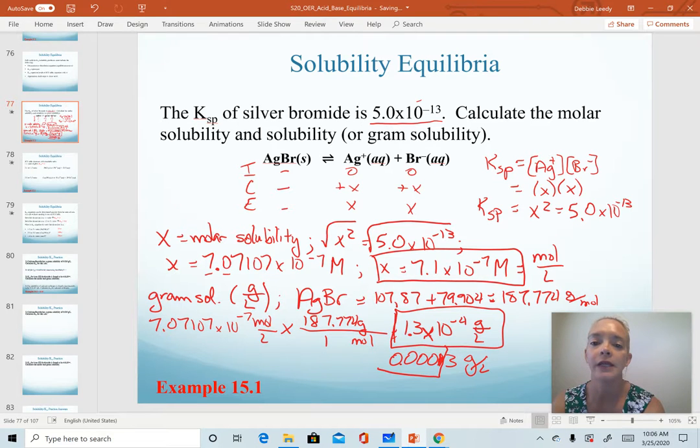Noticing our Ksp value, 10 to the minus 13, that tells us this is not a soluble salt. And that gram solubility helps to verify that. So the smaller your Ksp, the smaller your molar and your gram solubility value should be.